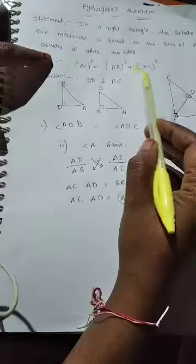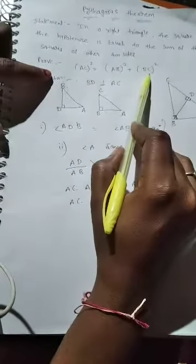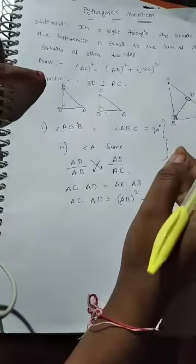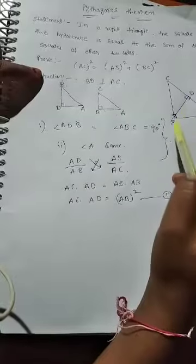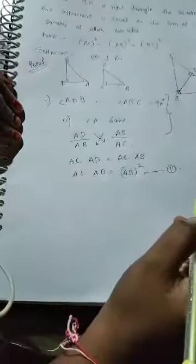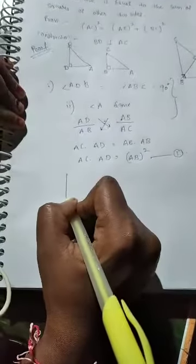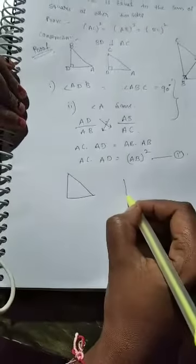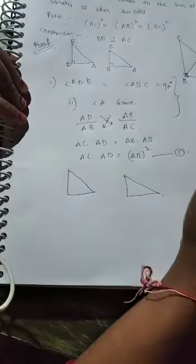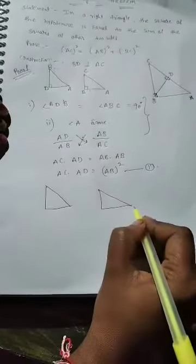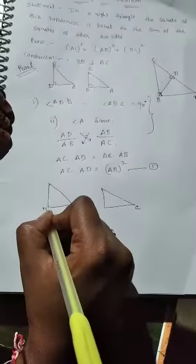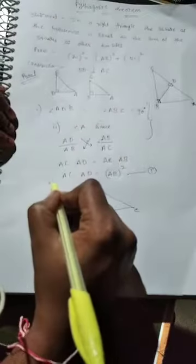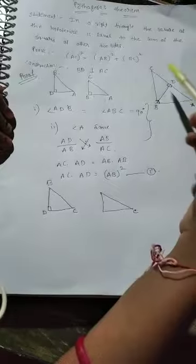Next we will do the proof for BC². For BC², we select the two triangles that share the side BC — that is possible by selecting triangle ABC and triangle BDC. Here, the angle C is not changing, so we mark it as angle C. In triangle BDC, D is the right angle, so we mark the right angle at D. The angle at B in triangle ABC is 90 degrees.